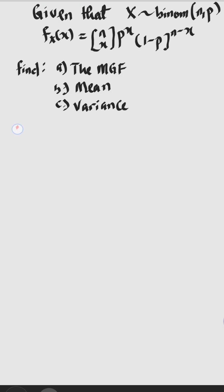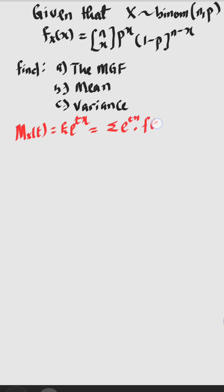Now we have the moment generating function M_X(t) to be the expectation of e to the power of tx. This can be written as the summation of e to the power of tx times the PDF of the distribution. This is the general rule for the moment generating function.